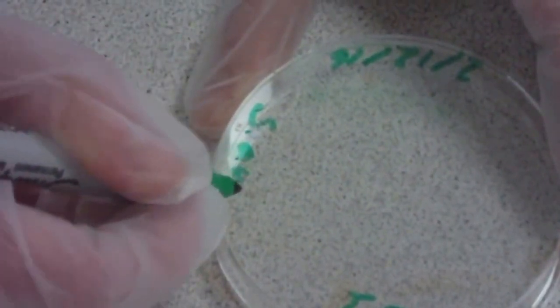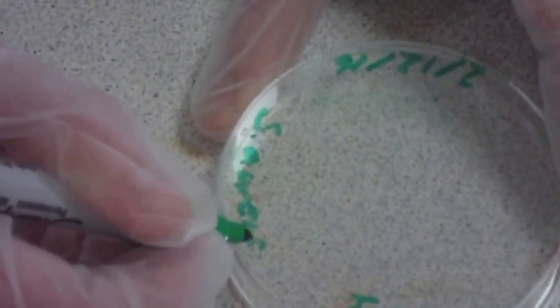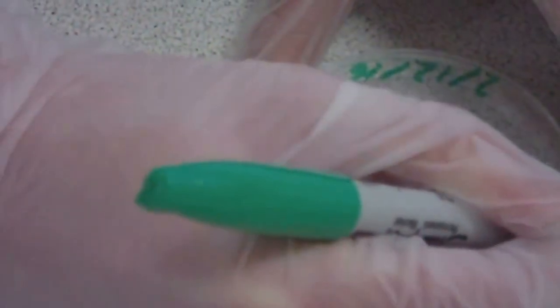Also, mark the underside of the plate using dots as you would see at 12, 3, 6, and 9 o'clock. This will help when streaking the plate.